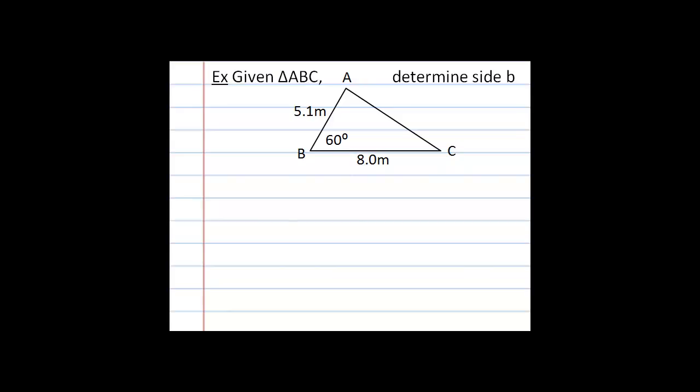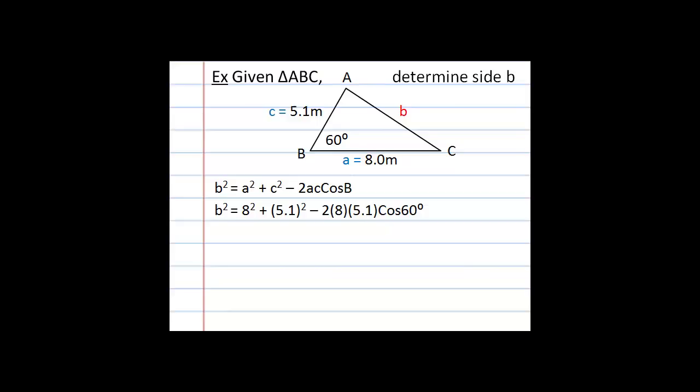Let's look at an example. Given triangle ABC, I want to determine the length of side b. Looking at the triangle, I have two sides and the contained angle between them, and I'm missing the opposite side — side b, across from angle B. Using the cosine law for side b: b² = a² + c² − 2ac·cosB. I label the sides: across from angle C is side c, across from angle A is side a, and I substitute in the given values for sides a and c and the angle B of 60°.